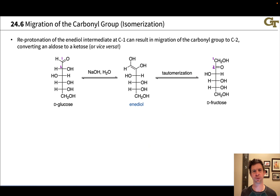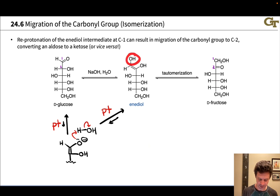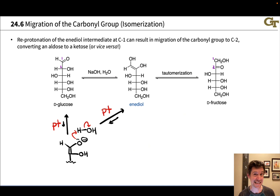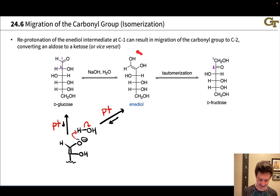On the last slide, we introduced the idea that carbon 2 in D-glucose and in any aldose is acidic, and we can deprotonate at that carbon to create an enolate. Reprotonation at the carbonyl oxygen creates an enol — and not just any old enol, but an enediol, because there are hydroxyl groups at carbon 1 and carbon 2 both linked to the carbons of the C=C double bond. So this is an enediol, or a 1,2-diol. One thing to note is that this is a tautomerization process — this enediol is a tautomer of the starting hydroxyaldehyde structure.